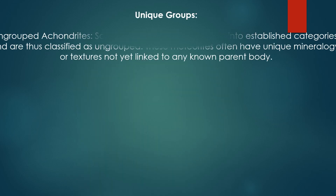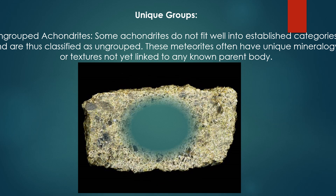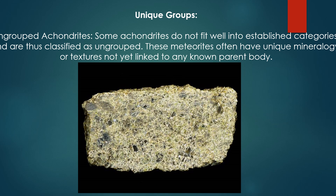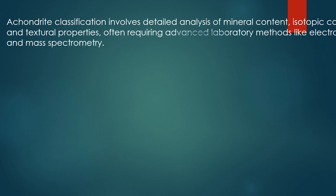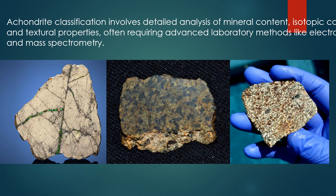Unique groups. Ungrouped achondrites: some achondrites do not fit well into established categories and are thus classified as ungrouped. These meteorites often have unique mineralogy or textures not yet linked to any known parent body. Achondrite classification involves detailed analysis of mineral content, isotopic composition and textural properties, often requiring advanced laboratory methods like electron microscopy and mass spectrometry.